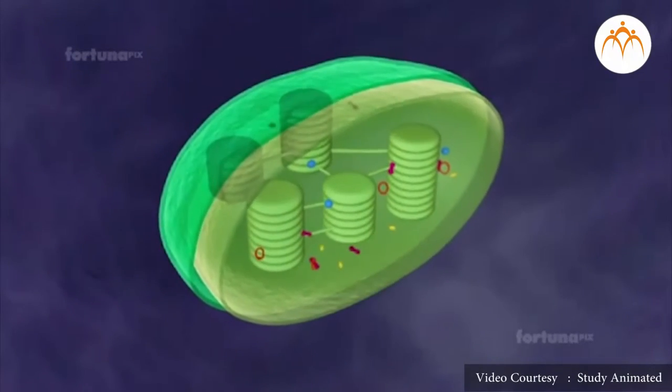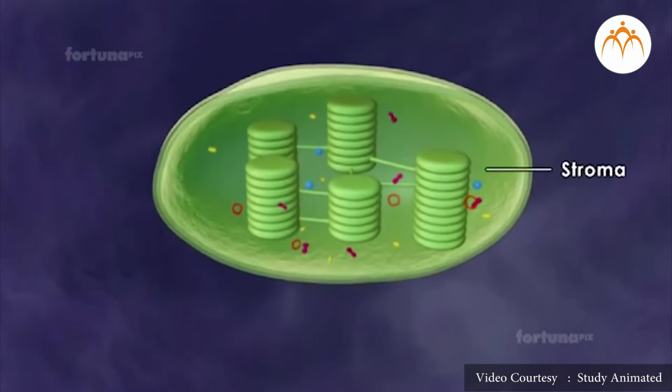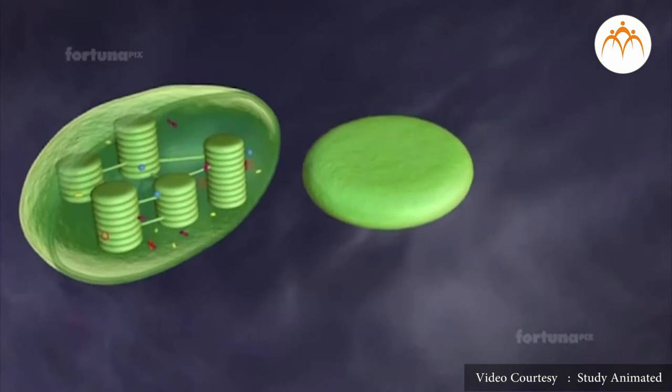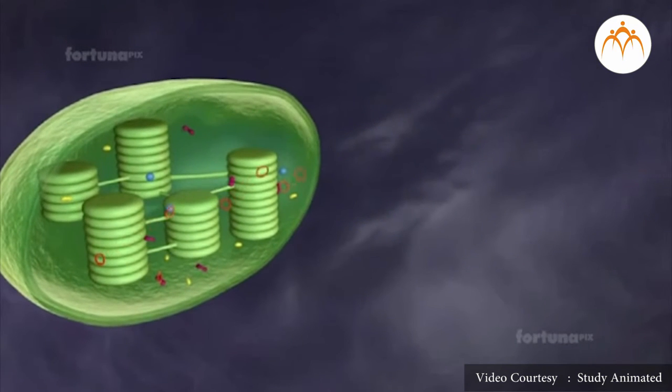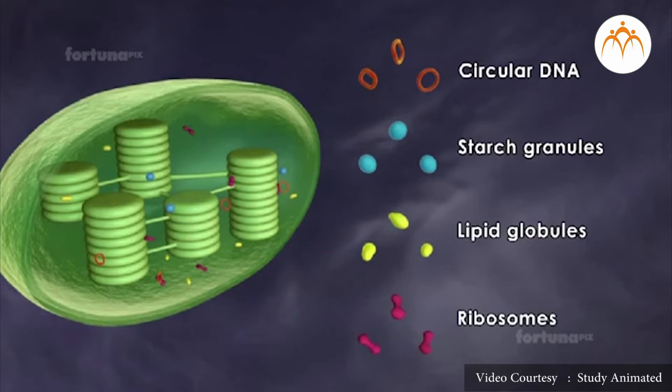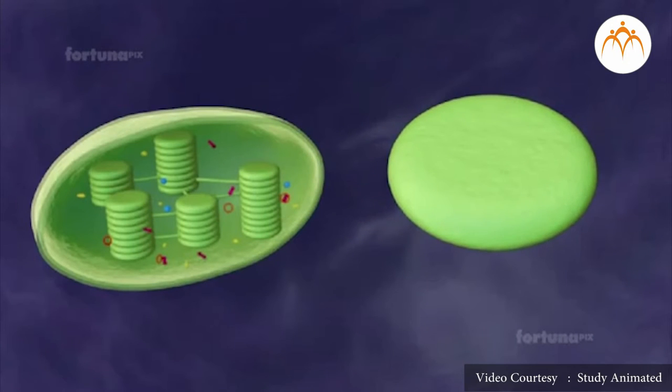Like mitochondria, chloroplasts are encompassed by two membranes. A matrix, the stroma, lies within the inner membrane. It contains DNA, ribosomes, lipid droplets, starch granules, and a complex internal membrane system whose most prominent components are flattened membrane-delimited sacs, the thylakoids.